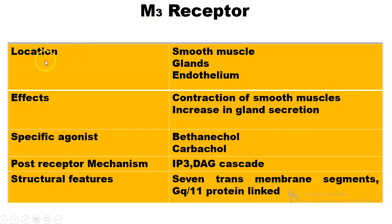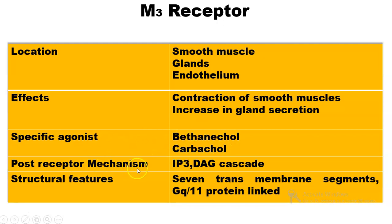Next are M3 receptors, located in smooth muscle, glands, and endothelium. The effects of M3 receptors include contraction of smooth muscles and increase in gland secretion. The specific agonists of M3 receptors are bethanechol and carbachol. The post-receptor mechanism involves the IP3 and DAG cascade. The structural features include 7 transmembrane segments and a Gq protein link.